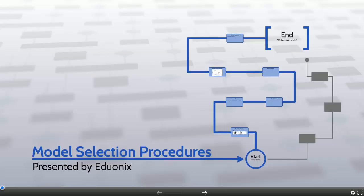Hello everybody and welcome to our sixth and final video of Unit 2 on supervised learning. This video is going to cover model selection procedures. How do we actually decide what is the best model for our data and how do we find and pick that data? Once again this is a presentation by Eduonyx.